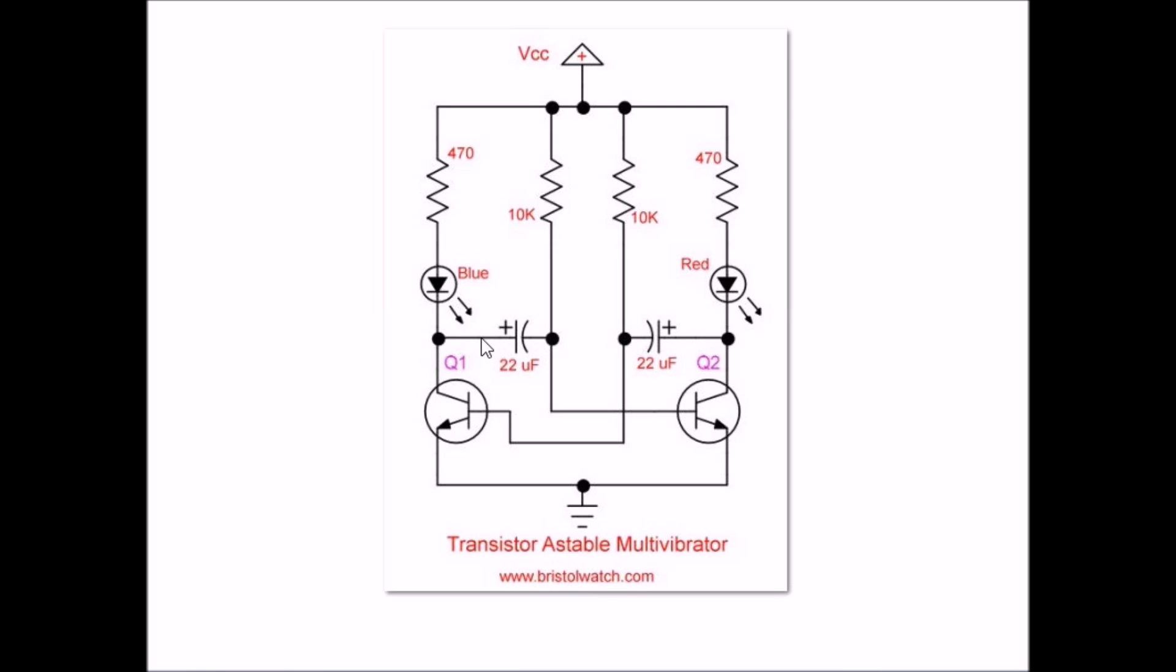It's the charge and discharge of these two capacitors connected to the collectors of the opposite transistor that will create a back and forth on-off type of oscillation. This is an oscillator. It's known as an astable multivibrator.